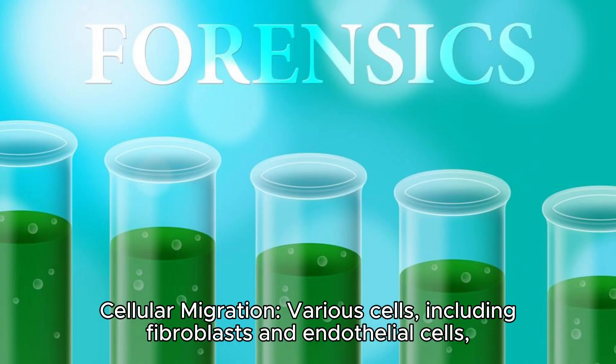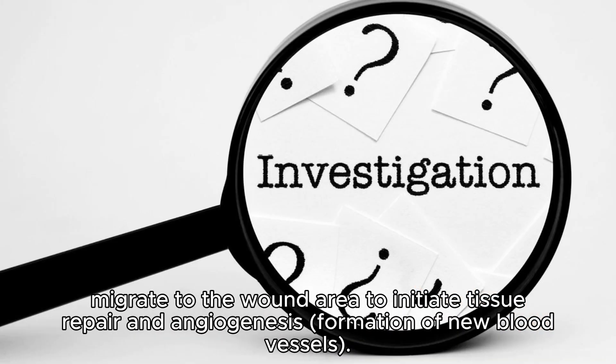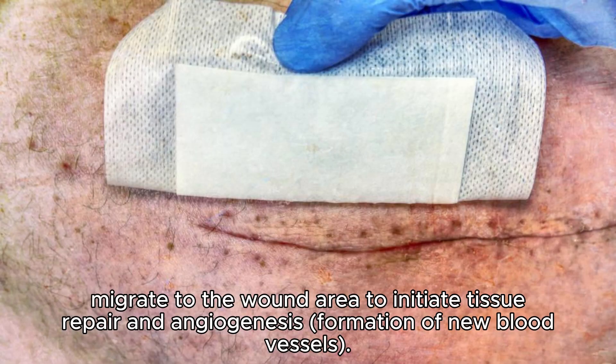Cellular migration: various cells, including fibroblasts and endothelial cells, migrate to the wound area to initiate tissue repair and angiogenesis — the formation of new blood vessels.